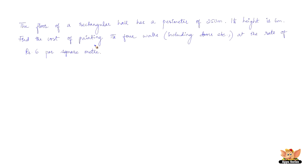Let us solve another problem. The floor of a rectangular hall has a perimeter of 250 meters and its height is 6 meters. Find the cost of painting its 4 walls (including doors, etc.) at the rate of Rs. 6 per square meter.